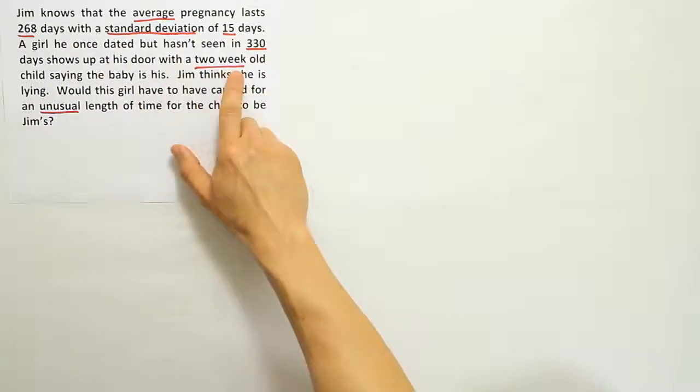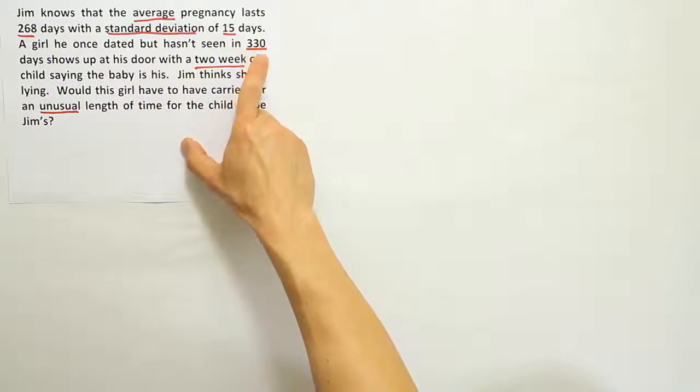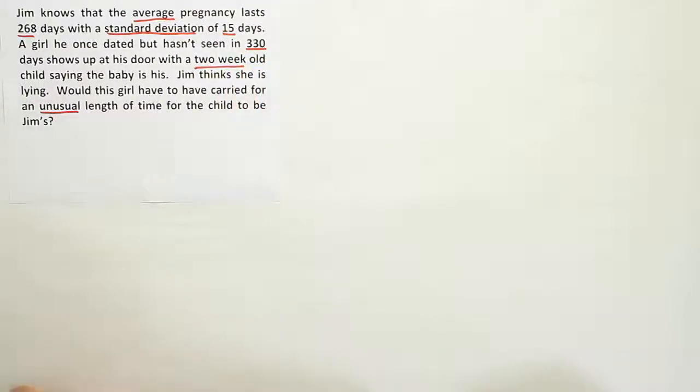But the child's already two weeks old, so the child was actually born 14 days prior to this. So we need to subtract from the 330 the 14 days and then work with that number because her pregnancy then would have to have been for 316 days.